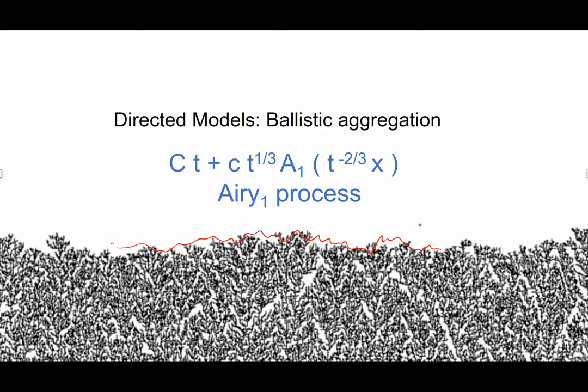Growing at rate CT one can actually prove by the subadditive ergodic theorem, though nobody knows what the capital C is. But on top of that, one should see fluctuations — the whole height should have a fluctuation of size T to the one-third. In the lateral direction you'll see a stochastic process that looks locally like a Brownian motion, calling it A1, the Airy-one process, because we started with a flat interface.